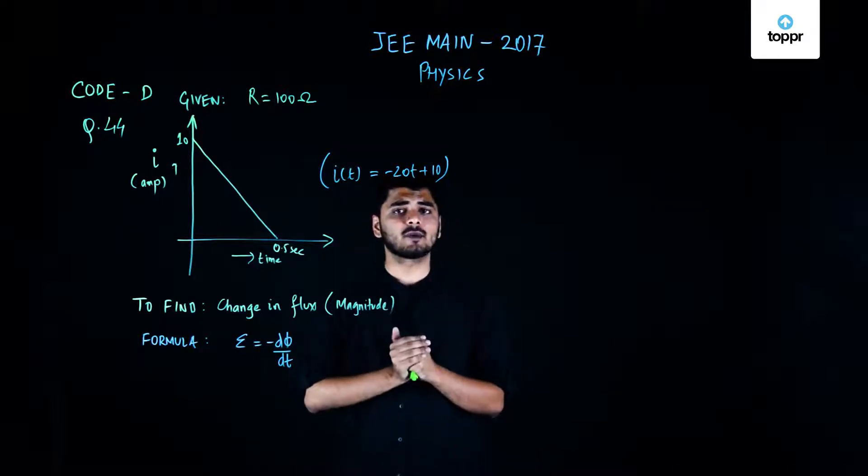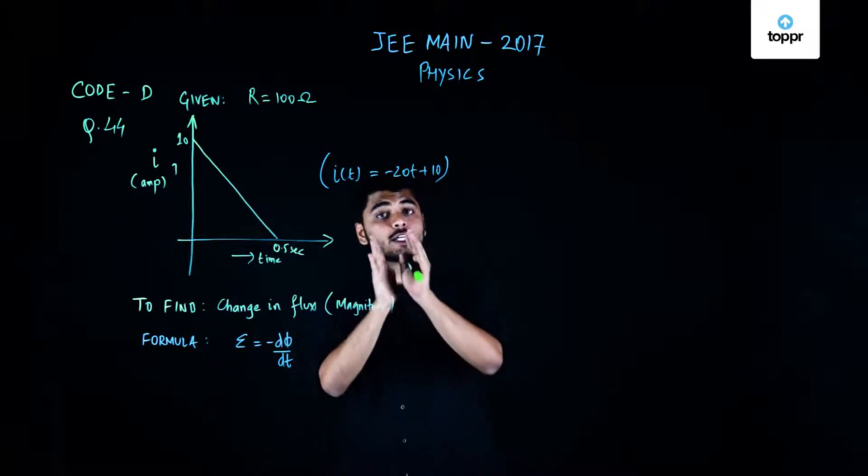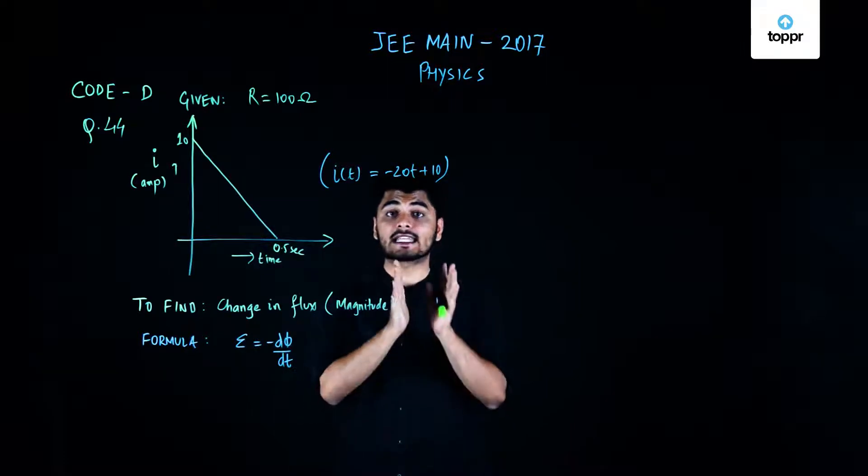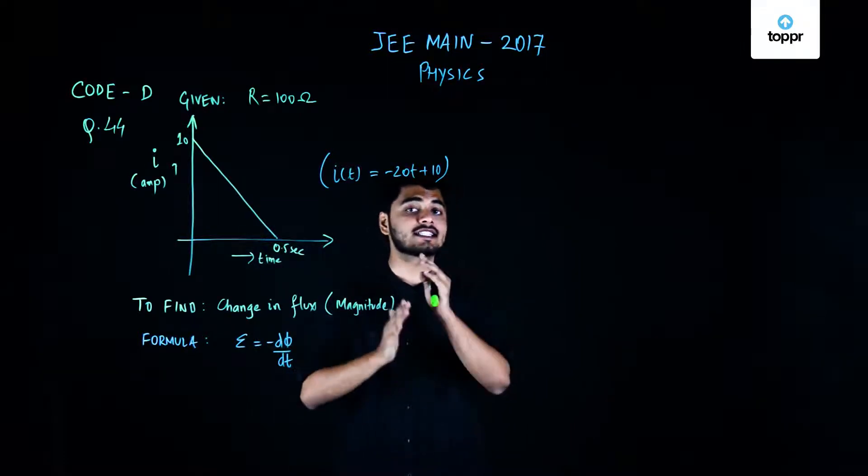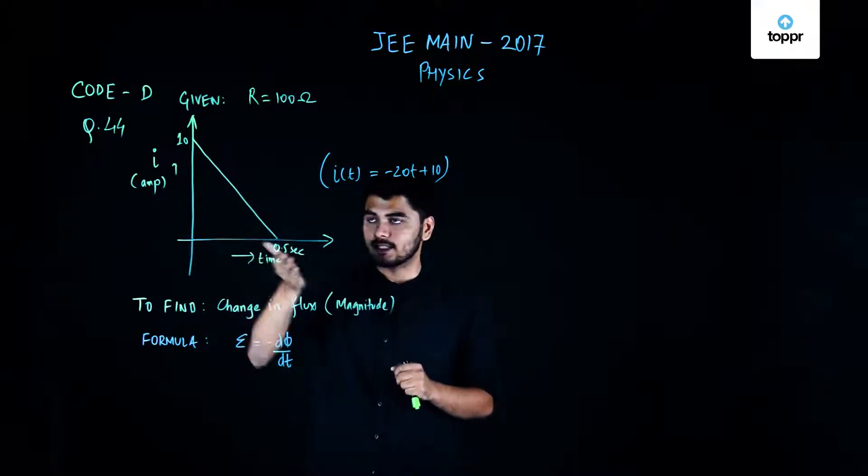In this question, we have been given a coil of resistance 100 ohms and a current is induced in that coil by changing the magnetic flux. The variation of current with time as that change in magnetic flux took place is given via a graph and the graph is as follows.